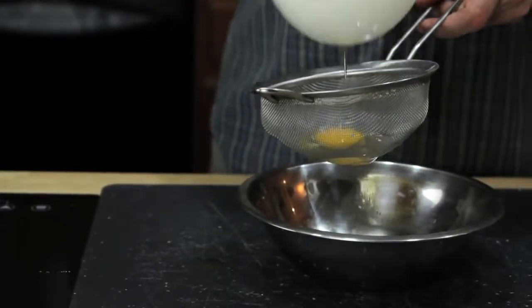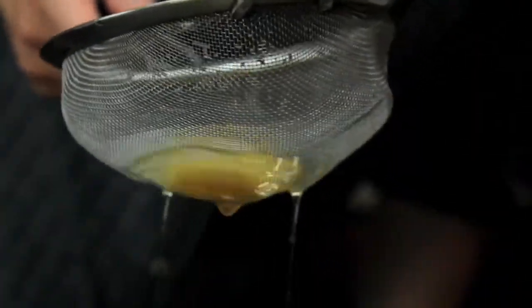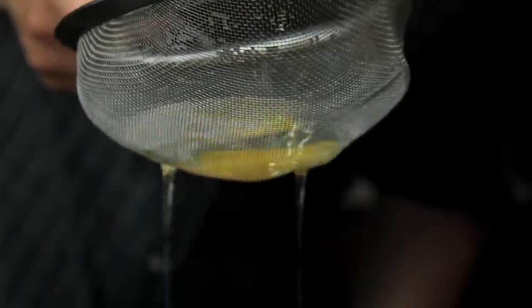You know, those really ugly ones with the wispy white floaters that completely ruin your brunch. To get rid of them, we're going to transfer our eggs to a fine mesh strainer and gently swirl it around until all the excess white is drained away. What you're left with is a nice, tight egg.